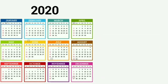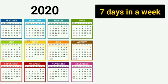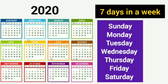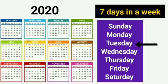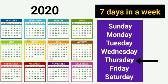Let's see in the calendar, dear children, there are 7 days in a week. The names of the days are: Sunday, Monday, Tuesday, Wednesday, Thursday, Friday and Saturday.